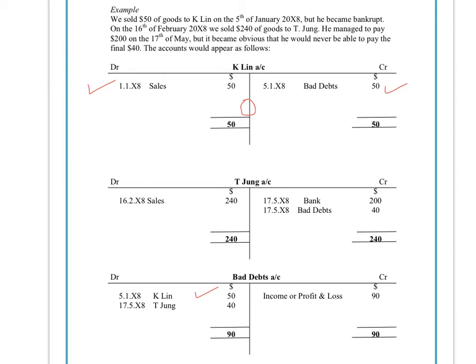For Jae-yung, we sold him $240 — so credit sales, debit his account in the sales ledger where all our debtors are kept. When he pays us the $200, that goes out of his account and into the bank account, which leaves the bad debt of $40, which we would credit to make that a dead account. And we would debit our bad debts account $40.